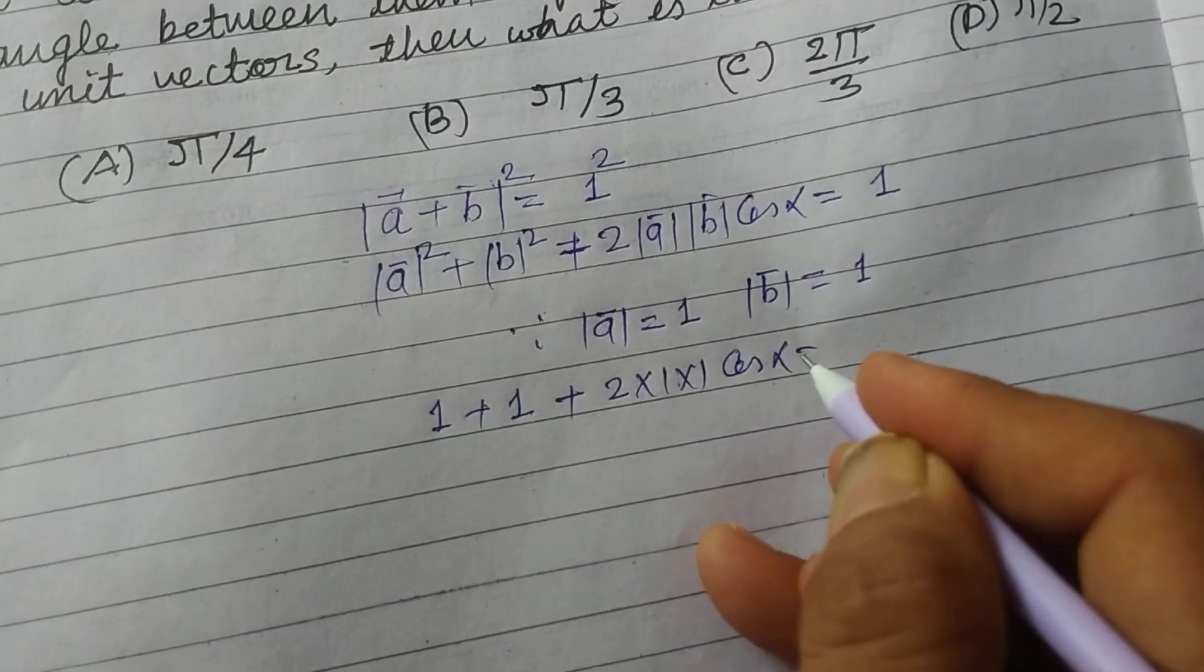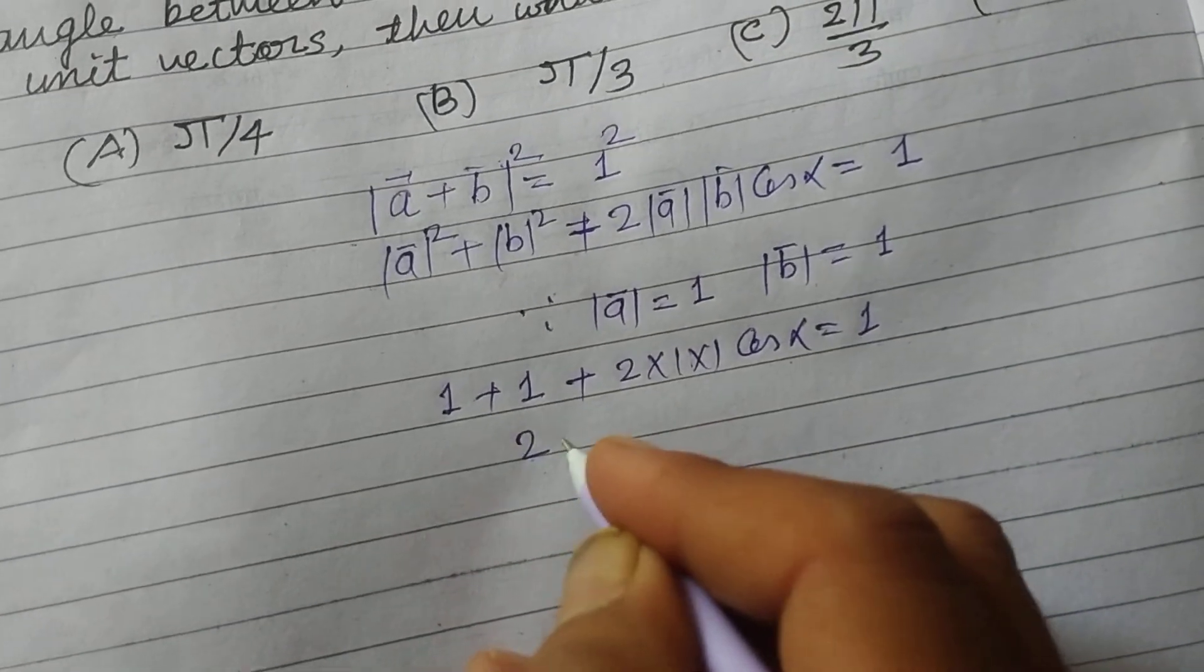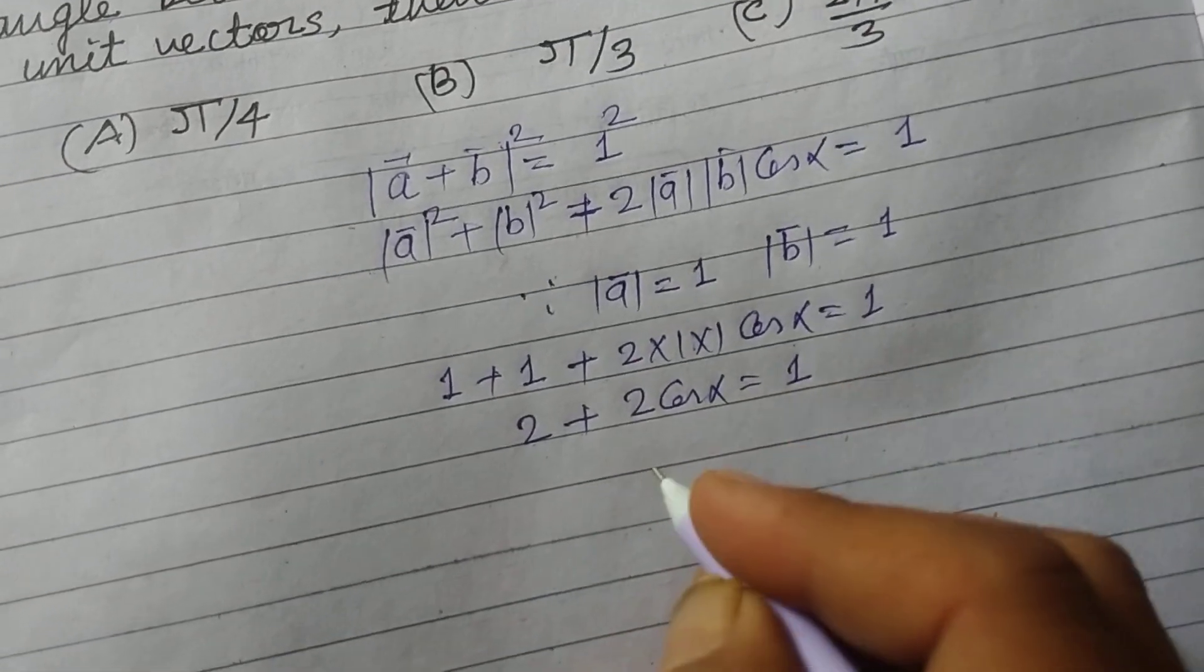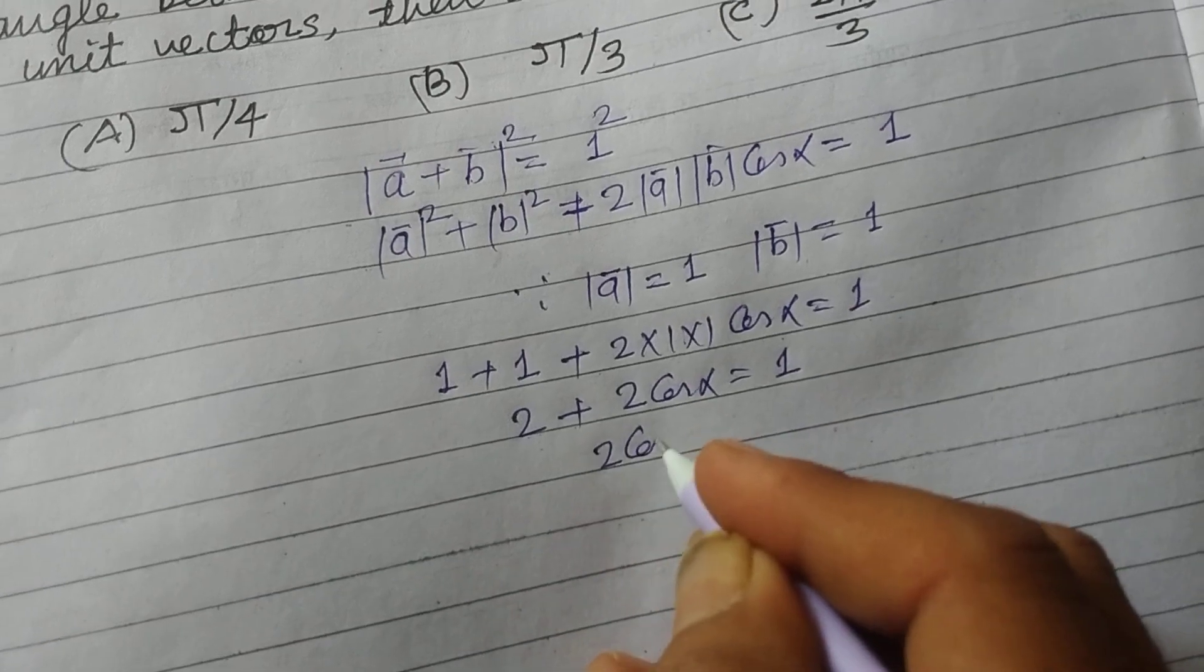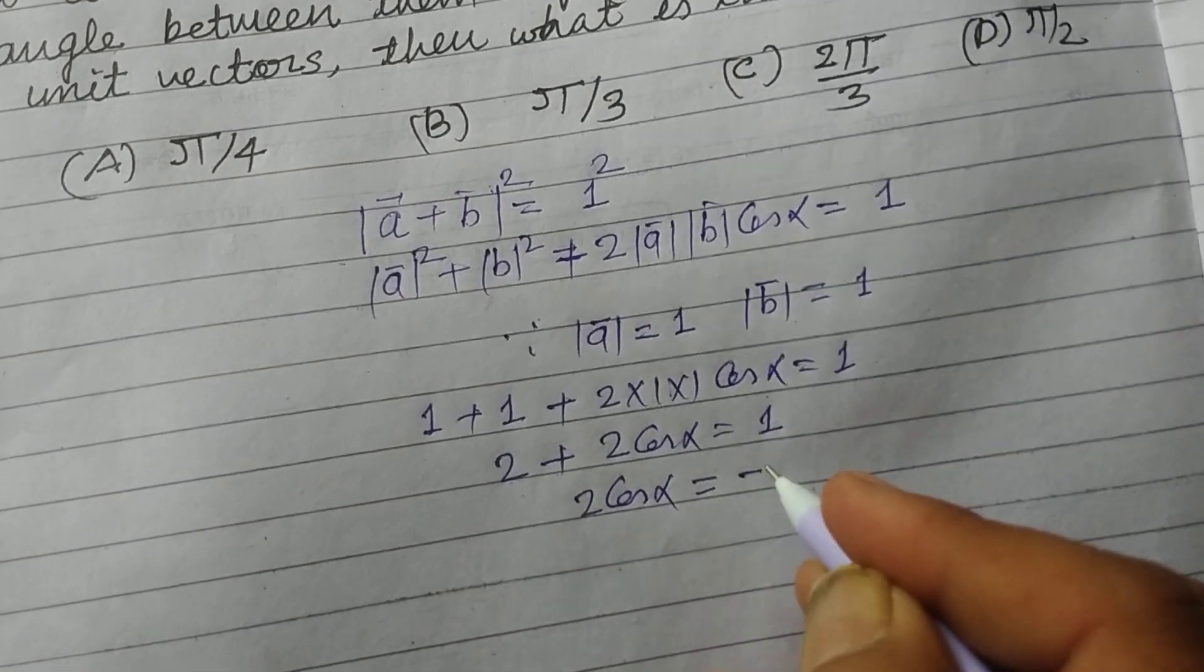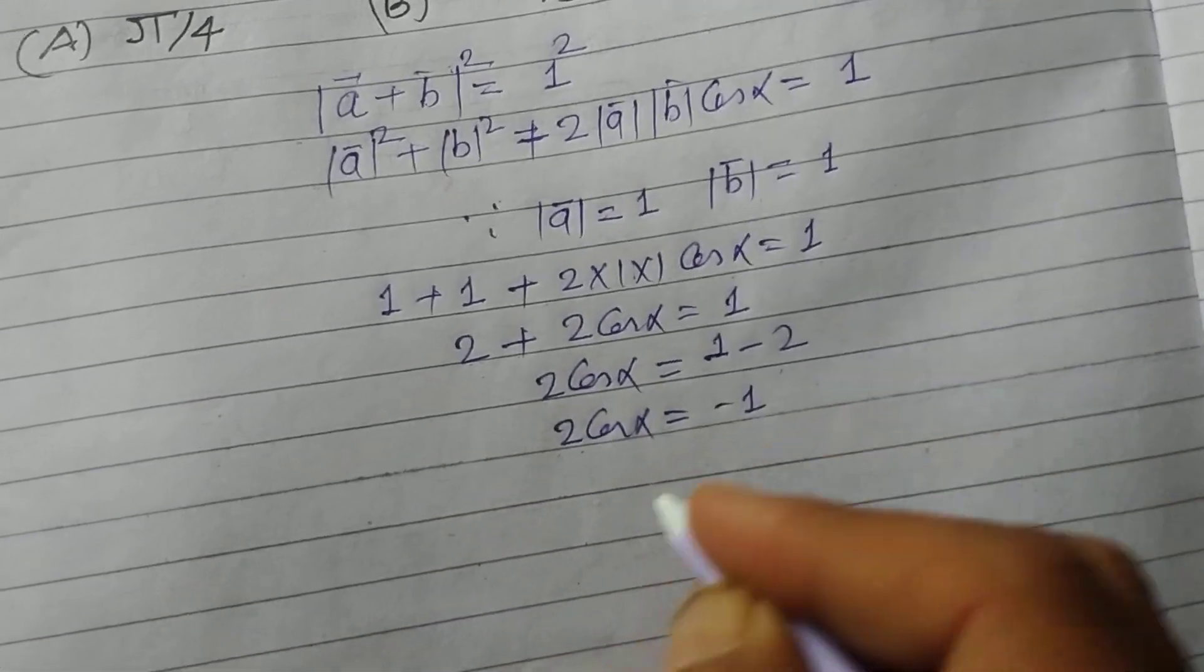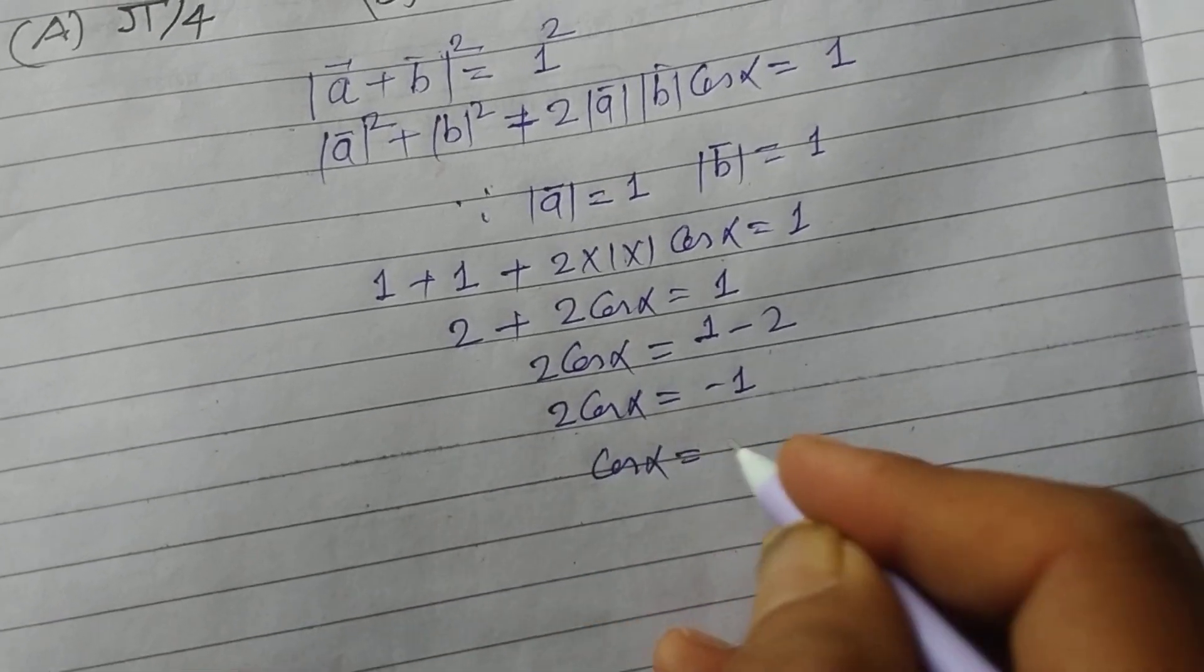So this is 2, this is 2 cos alpha equals 1. And 2 cos alpha equals 1 minus 2. So 2 cos alpha equals minus 1, and cos alpha equals minus 1 by 2.